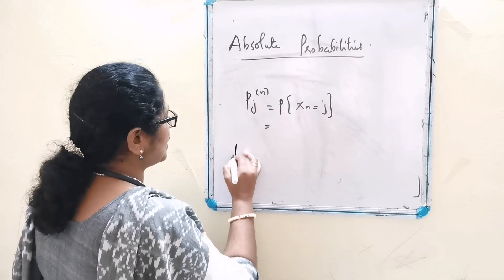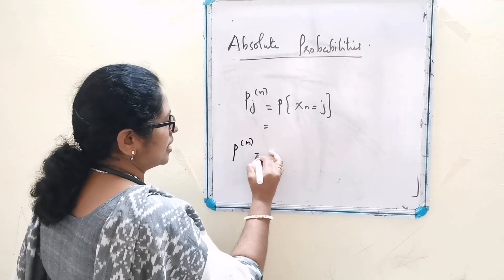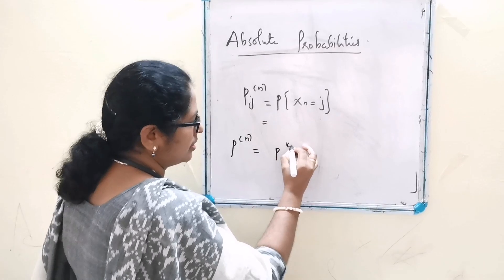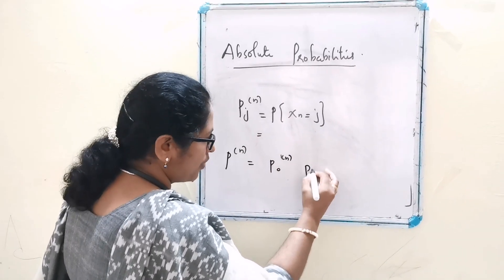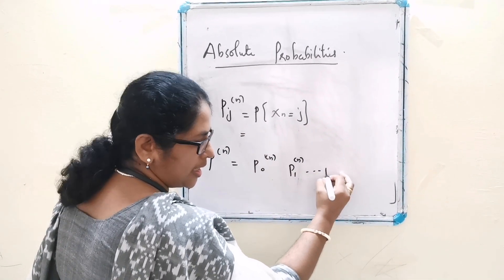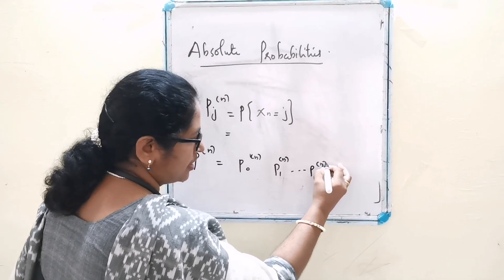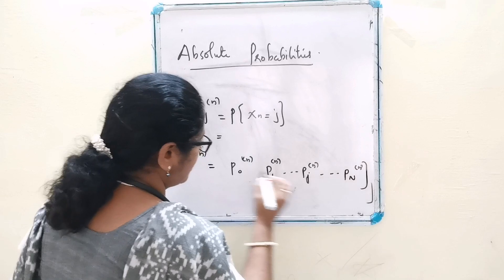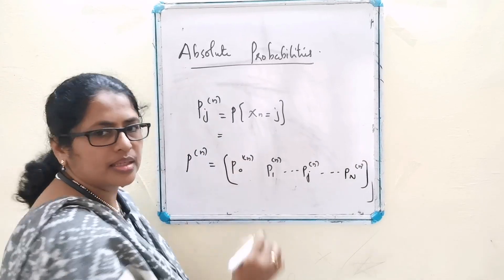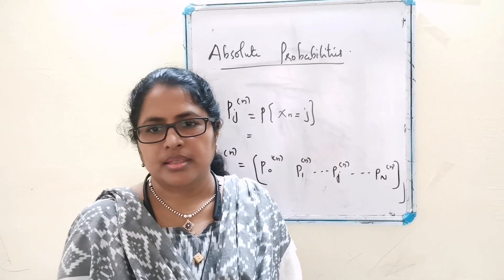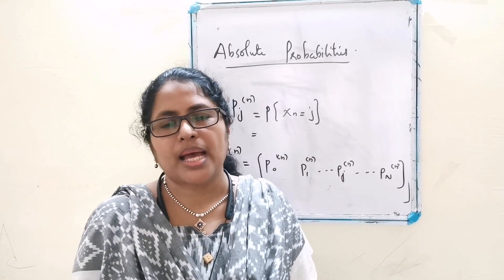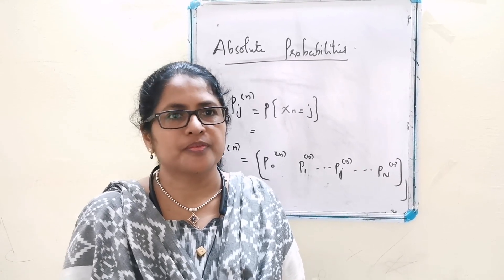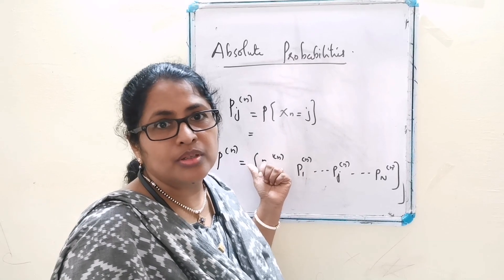Then P(N) is equal to the vector P0(N), P1(N), ... Pj(N), ... Pn(N), which is known as the N-step absolute probability vector. The sum of the elements of P(N) is equal to 1.